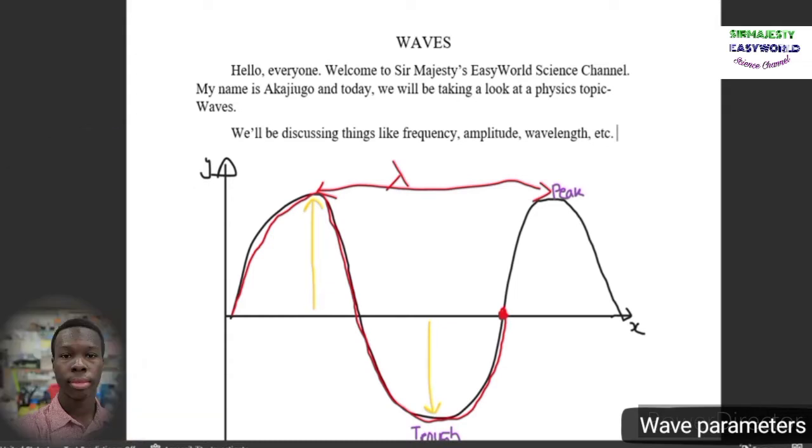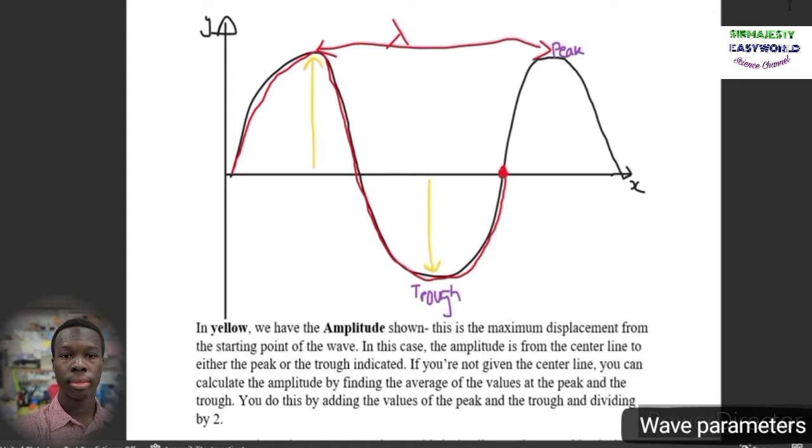The first thing is to draw a representative diagram of a wave and to label different parts of the wave. The black here represents the actual wave, and in yellow we have the amplitude shown. The amplitude is the maximum displacement from the starting point of the wave, the distance between this horizontal bar all the way up to the peak of the wave.